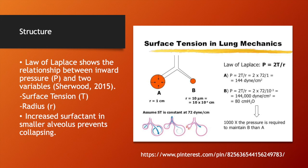There is an equation representing the Law of Laplace. This equation shows the relationship between the inward pressure in the alveolus and two other variables: surface tension and the radius of the alveolus. The inward pressure is directly related to surface tension and inversely related to the radius. That is why the surface tension variable is in the numerator and the radius variable is in the denominator.